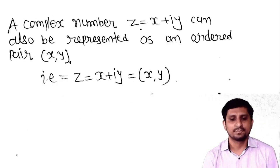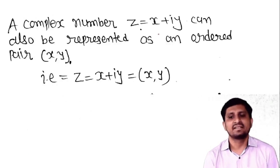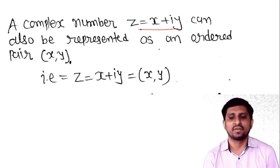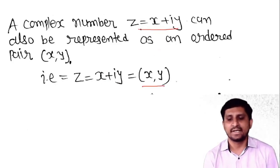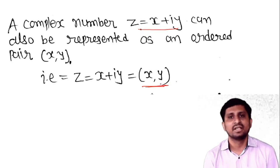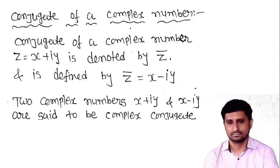A complex number z = x + iy can also be represented in Cartesian form with the notation (x, y).